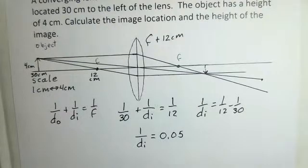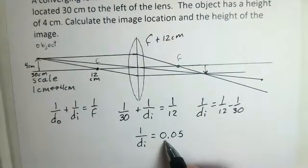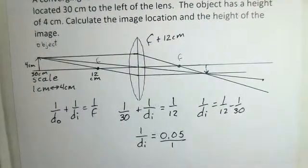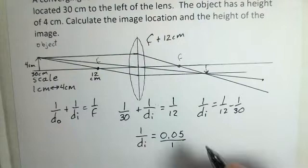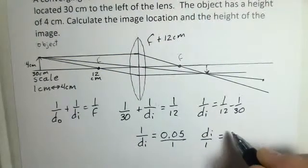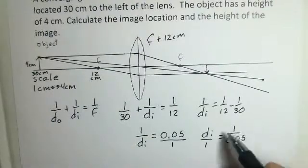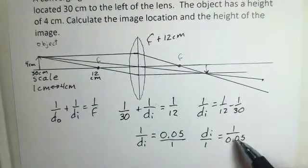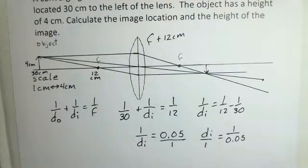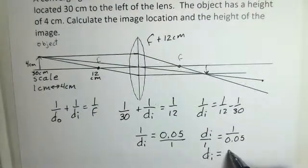I can't stop there. I need the value of DI. I have to invert both sides. You can think of this 0.05 as being over 1. Inverting both sides, DI equals 1 over 0.05. I came up with a value for DI of 20 centimeters.